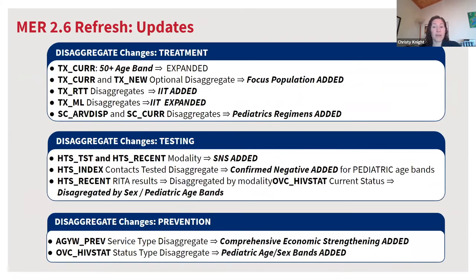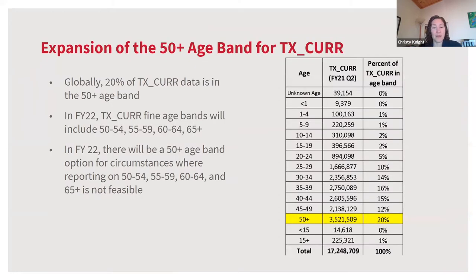The rest of the MER 2.6 updates are all related to disaggregate changes. The most notable is the expansion of the 50-plus age band for TX-CUR into finer age bands. Globally, 20% of TX-CUR data is reported in the 50-plus age band, making it proportionally the largest age band. In order to get better visibility into our PLHIV and treatment populations, the five-year age bands will be expanded up to 60-64, then 65-plus. For FY22, a 50-plus age band option will be available when reporting for these finer age bands is not yet possible, but the intent is that all reporting will shift to finer age bands in the future.